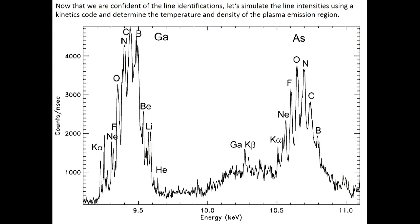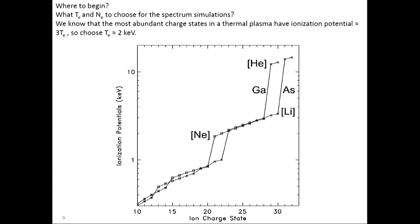Now that we're confident of the line identifications, let's use a kinetics code to simulate the spectral line intensities and see if we can determine the temperature and density of the plasma. The kinetics code we'll use is FlyCheck — it's easy to use and accessible. To calculate a spectrum, we need to start with a temperature and a density to plug into the code, so we need a guess.